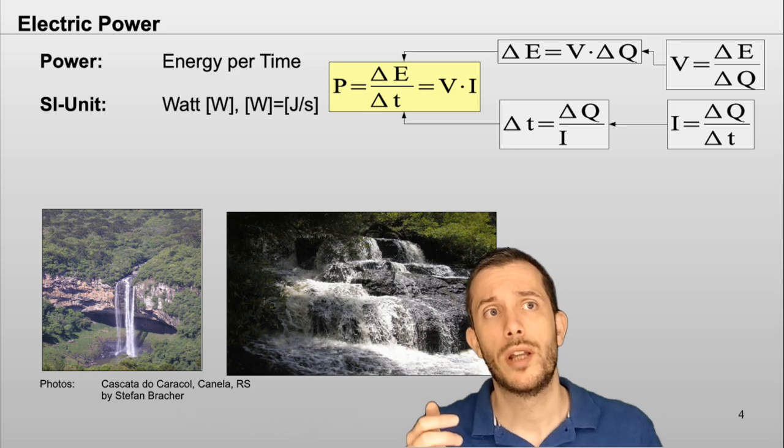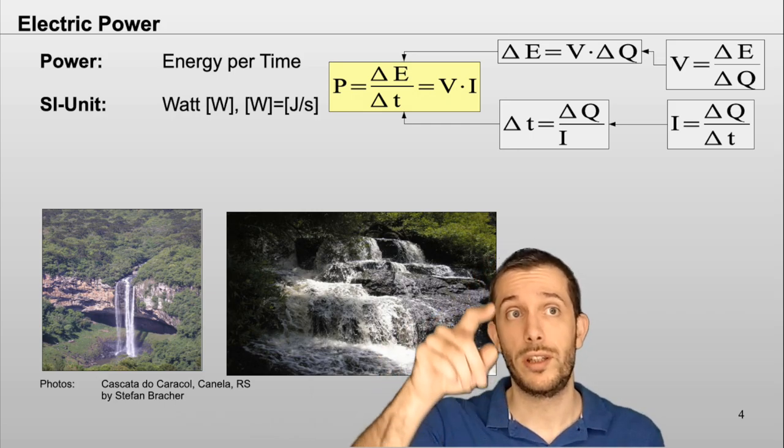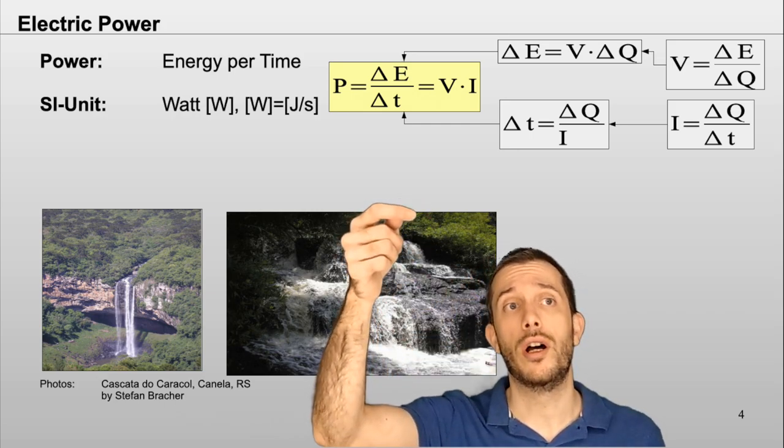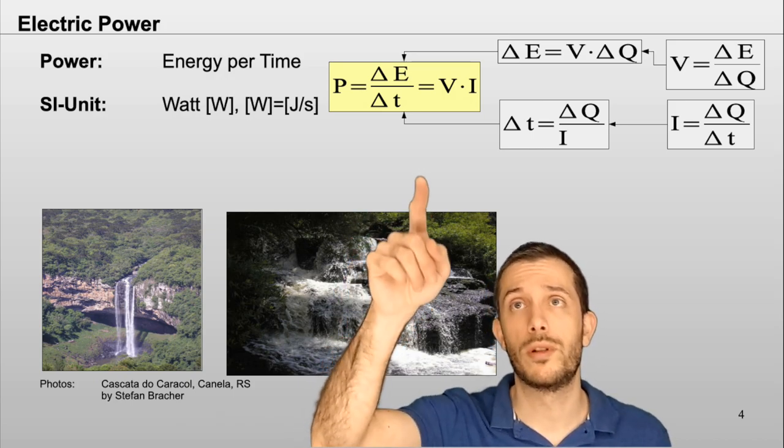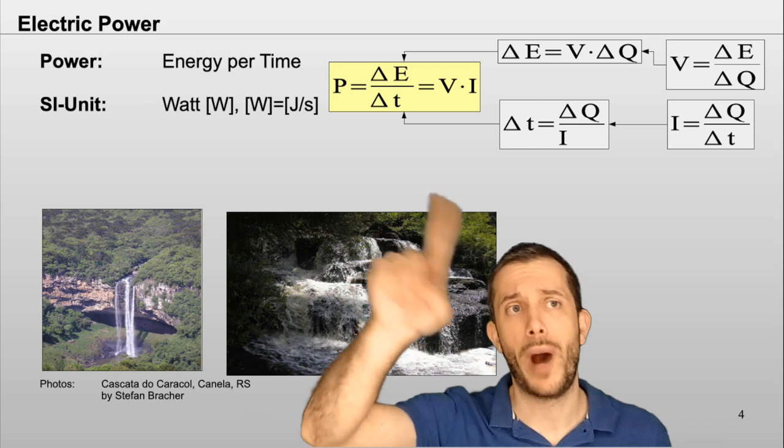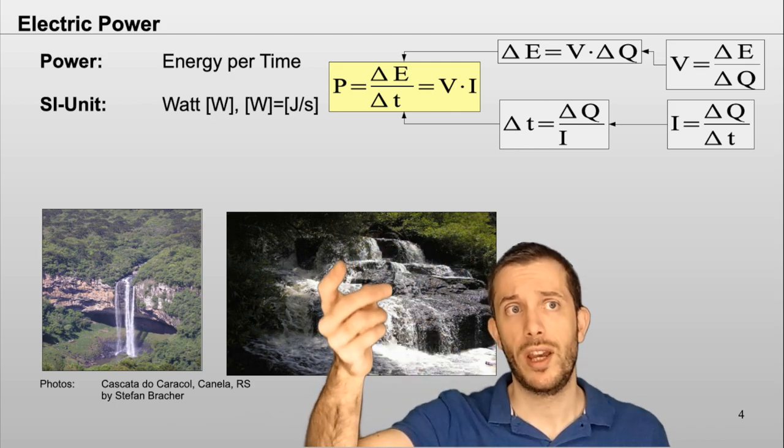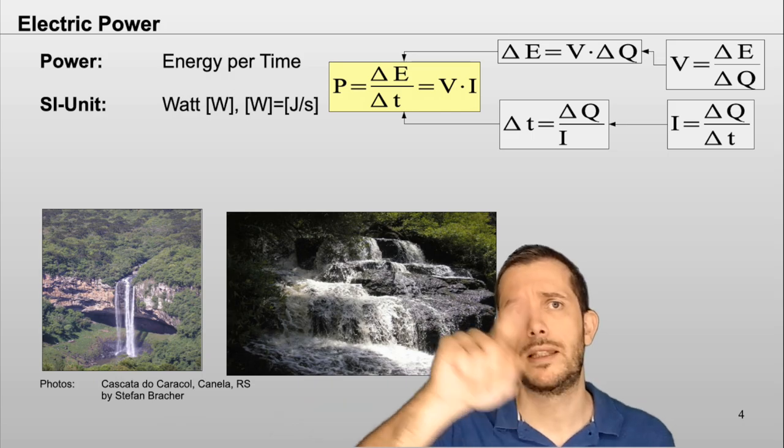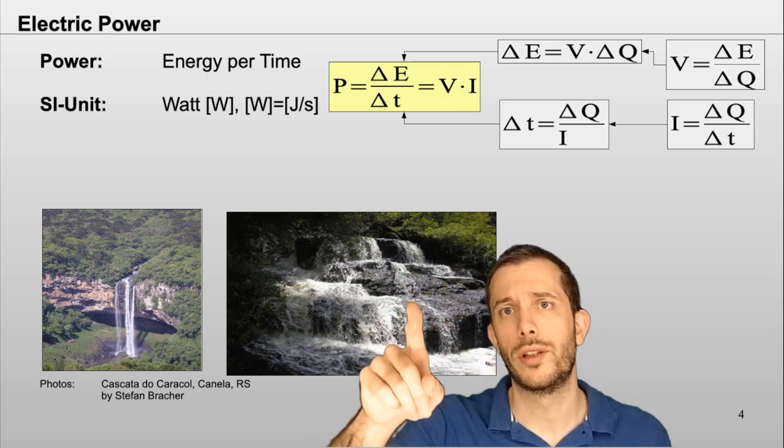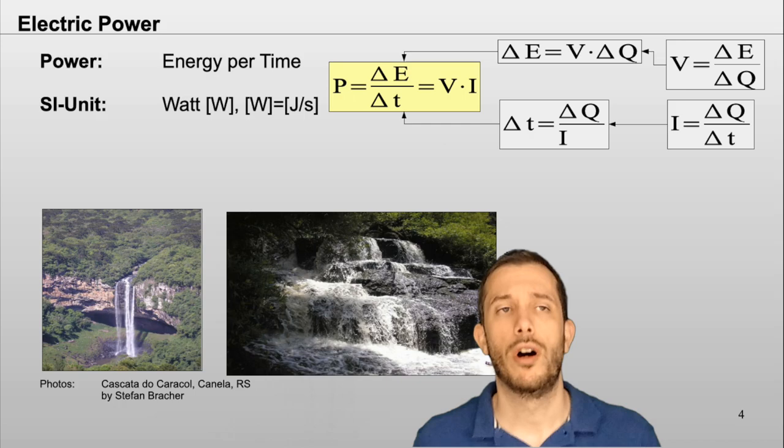And we can use that the voltage is change of energy per charge, so joules per coulomb. We can combine this and what we come up with is that the power for an electric device is simply the current times the voltage on which it operates.